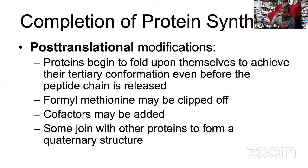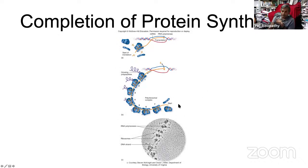After the protein is made, post-translational modifications occur: splicing of introns, addition of cofactors, and phosphorylation to make the protein functional. This is like a big cell factory — you can see ribosomes with messenger RNA ribbons continuously making protein. Transcription and translation together represent the actual process of a bacterium making protein.